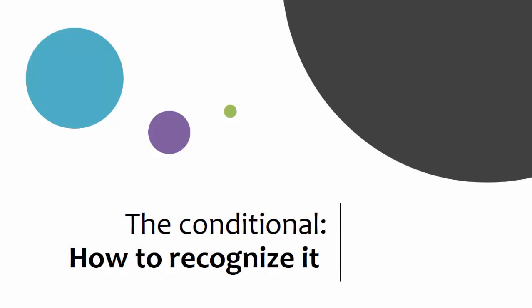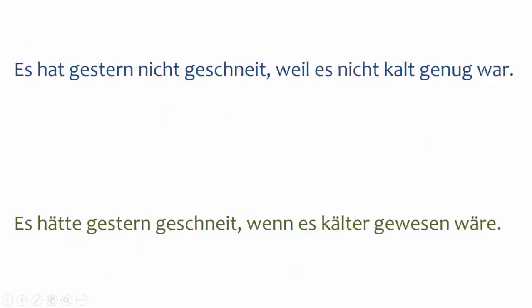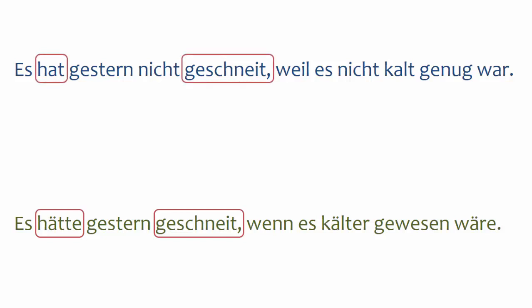Now let's look at how you can recognize conditional and distinguish it from the indicative. Working left to right, you can see that both sentences use a helping verb — hat for the indicative, hätte for the conditional — together with the participle geschneit. The difference is that the helping verb in conditional has an umlaut and a slightly different conjugation. The helping verb hat has no umlaut, denoting indicative. The helping verb hätte does have an umlaut, as well as a different ending, denoting conditional.